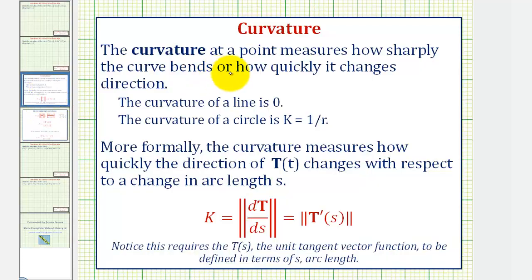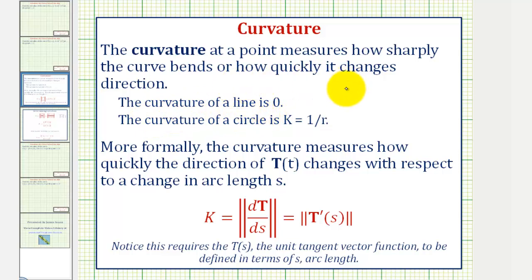The curvature at a point measures how sharply the curve bends or how quickly it changes direction. As an example, the curvature of a line is zero since a line does not bend or change direction, and the curvature of a circle is equal to the reciprocal of the radius, or one divided by r.